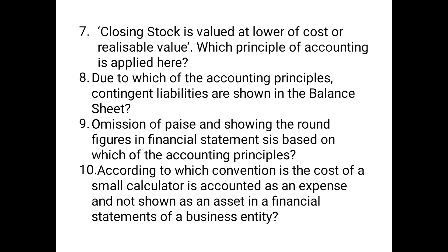Question 10: According to which convention is the cost of a small calculator accounted as an expense and not shown as an asset in a financial statement? Answer: Convention of Materiality — since the small calculator is an asset but of very insignificant value, it is included as an expense by merging it with expenses. I hope the part discussed in this video is clear to you. Go through the video once again, revise the conventions, and complete all your written work in your copies. Thank you children.